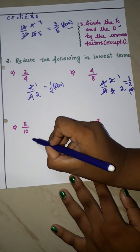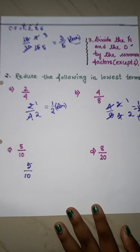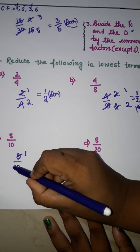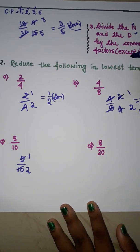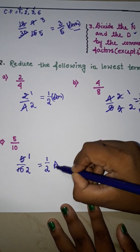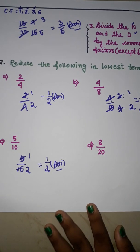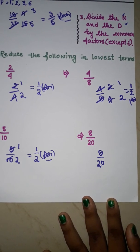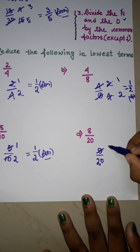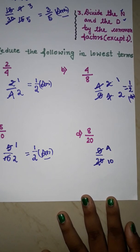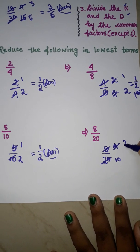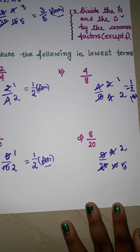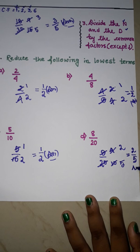Next, 8/20. We divide both by 2: 8÷2=4, 20÷2=10. Now 4 and 10 — divide by 2 again: 4÷2=2, 10÷2=5. Now 2 and 5 cannot be divided by any single common number, so our final answer is 2/5.